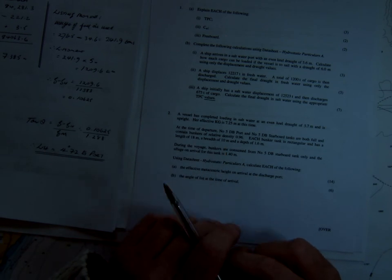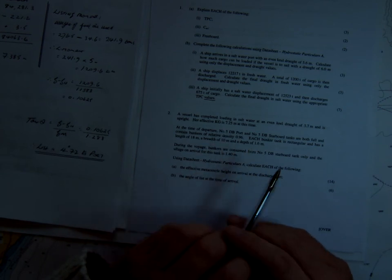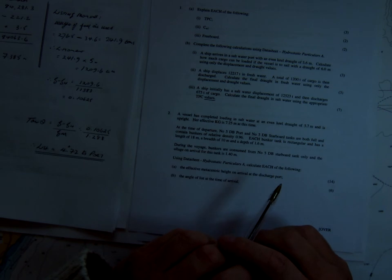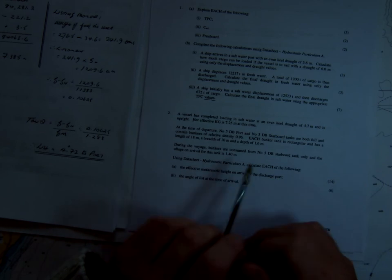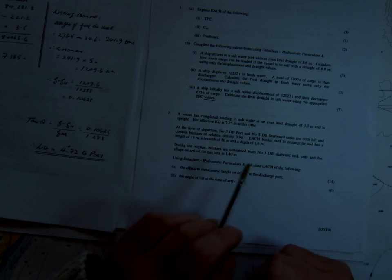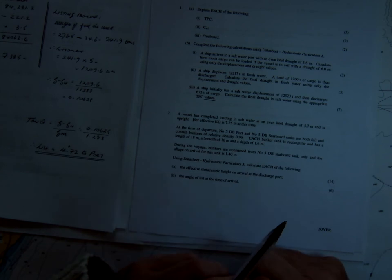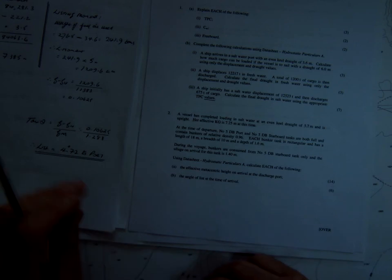Of course, metacentric height is another way of saying GM, so we're looking to calculate the final GM and then the list. Now, we're at 5.7 metres in saltwater, so that's our final displacement if we look on the hydrostatic particulars. And that includes the weight of the oil in the tanks. So what happens is we sail, and then during the voyage, we use up part of the oil from the starboard tank. So what we're going to have to do is find out how much weight we've used from the starboard tank, and then work out our GM.